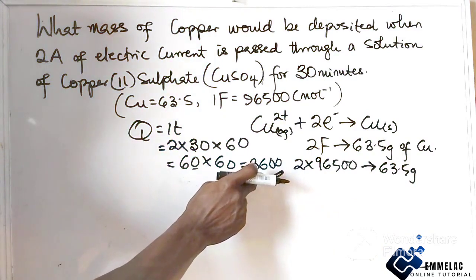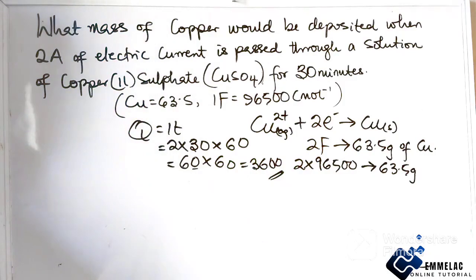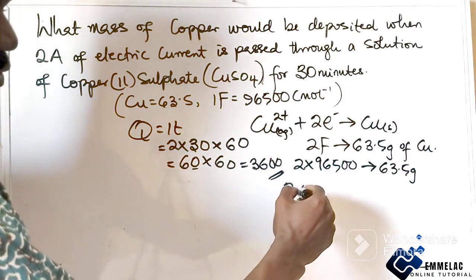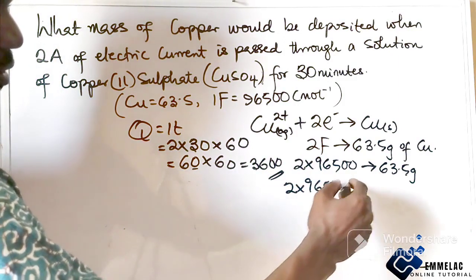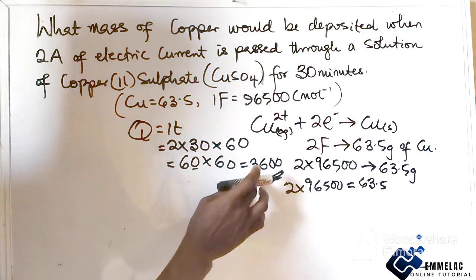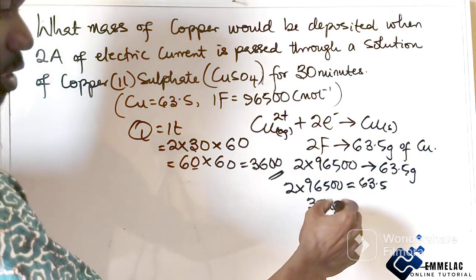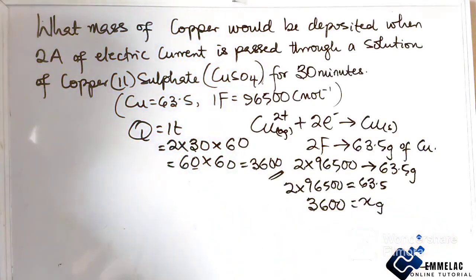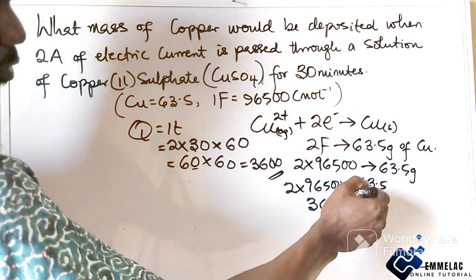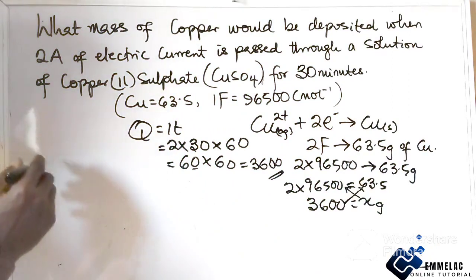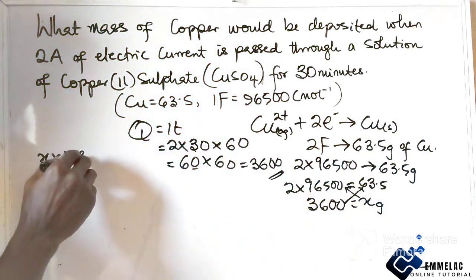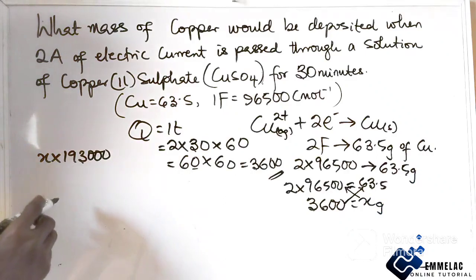Now, if two times 96500 coulombs deposits 63.5 grams of copper, what mass of copper will 3600 coulombs deposit? Let the unknown mass be x. Cross-multiplying: x times 193000 equals 63.5 times 3600.